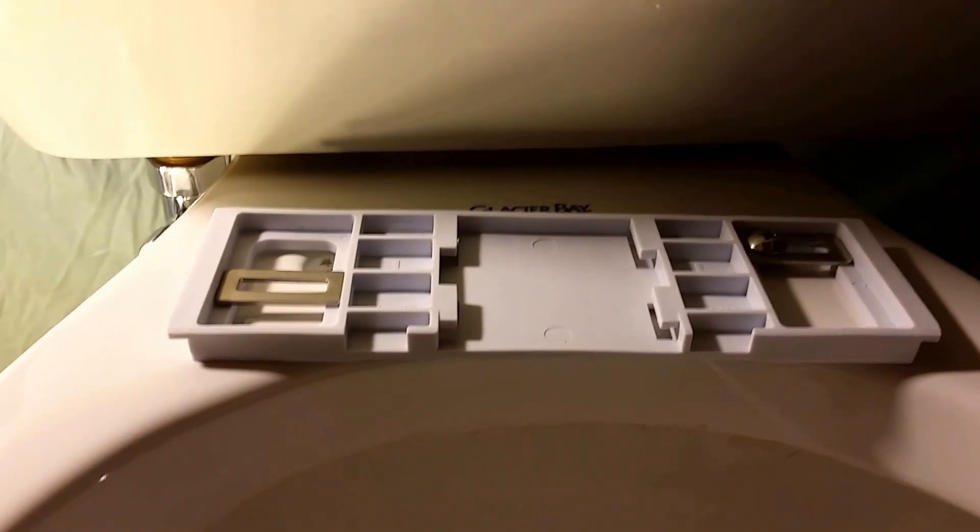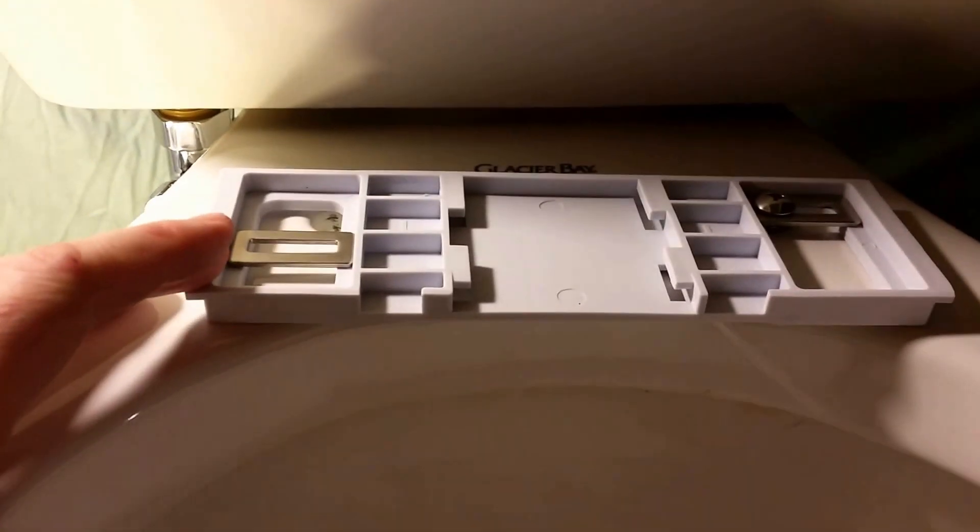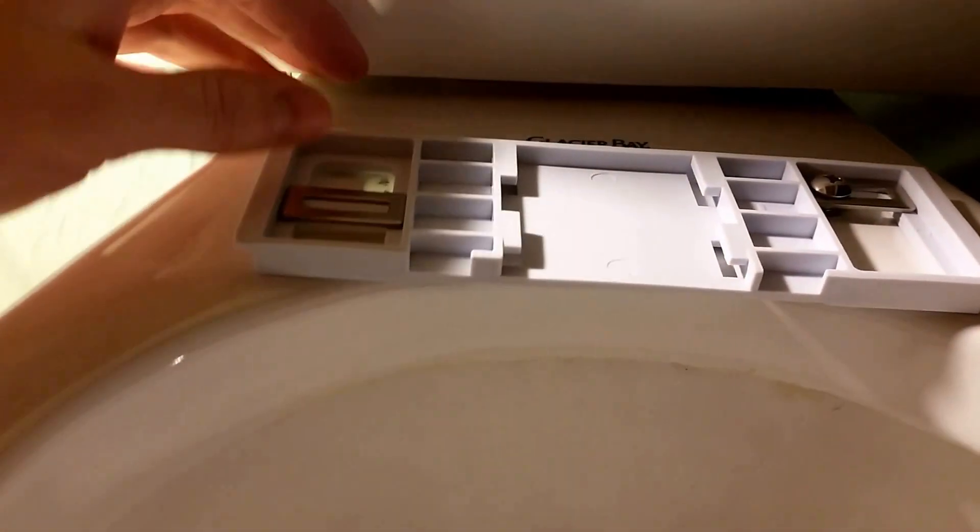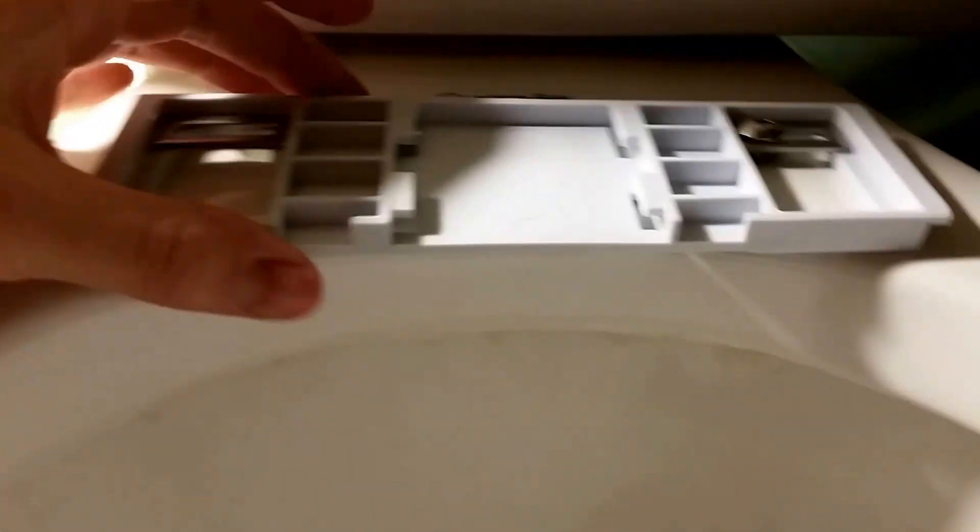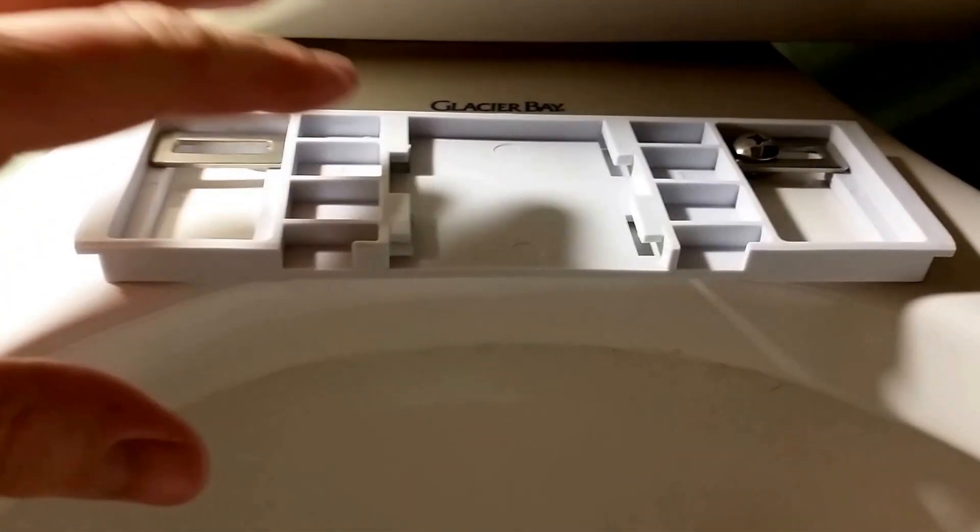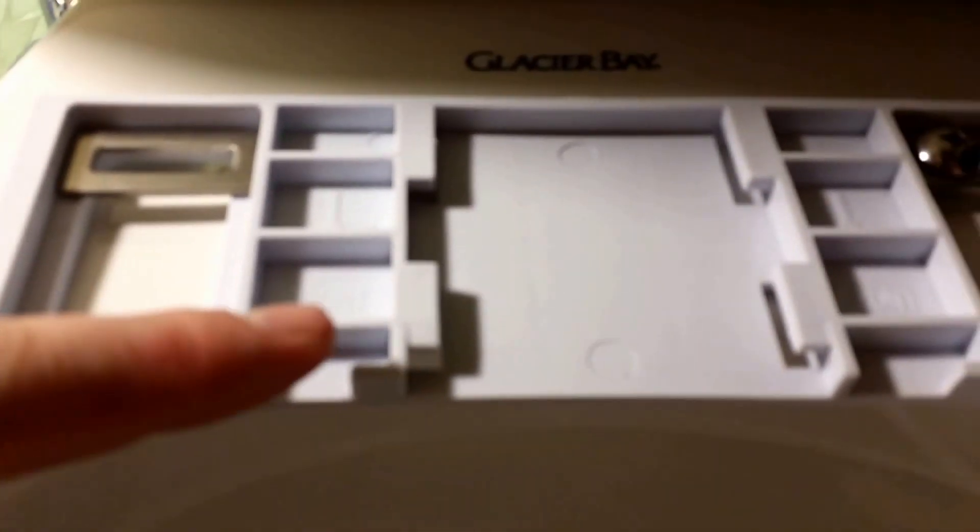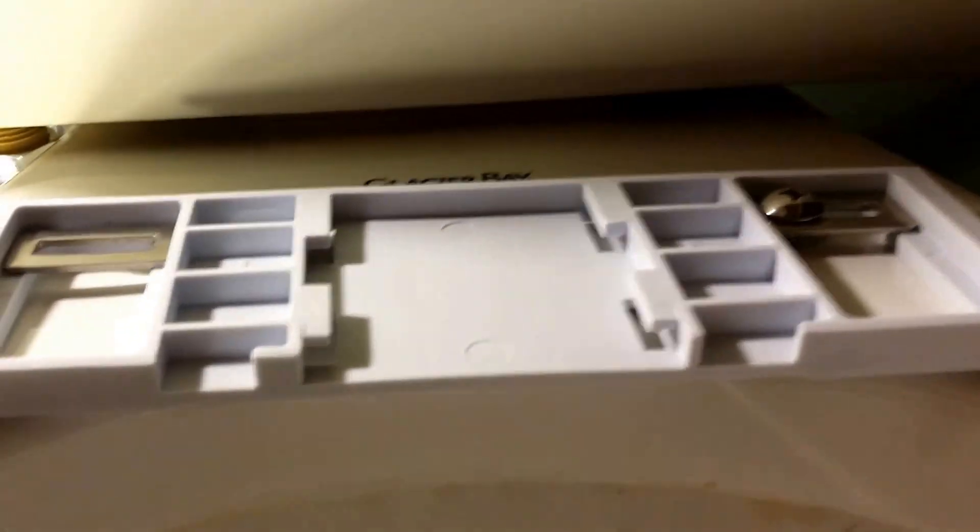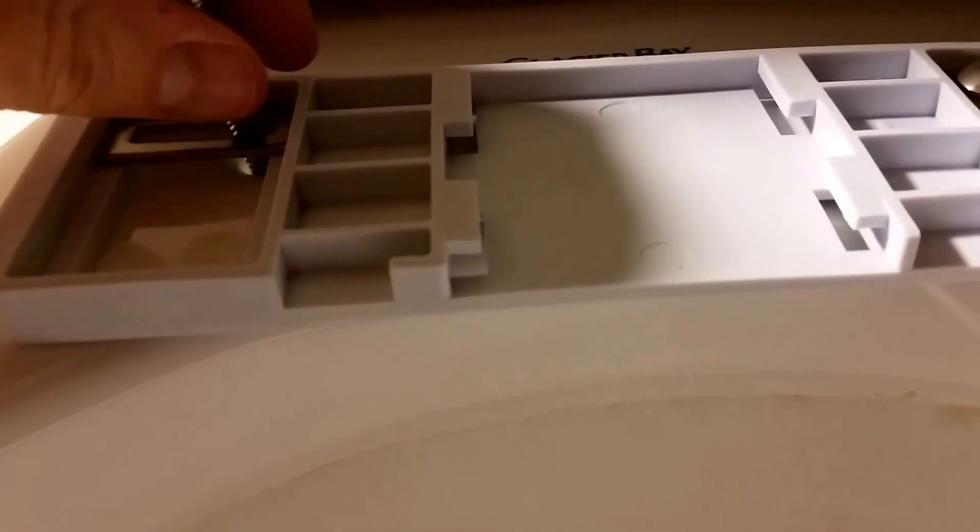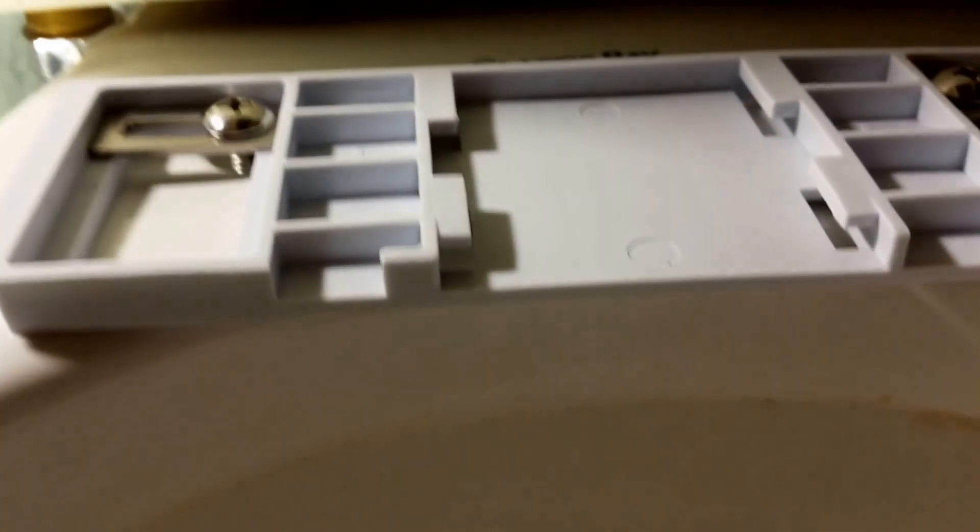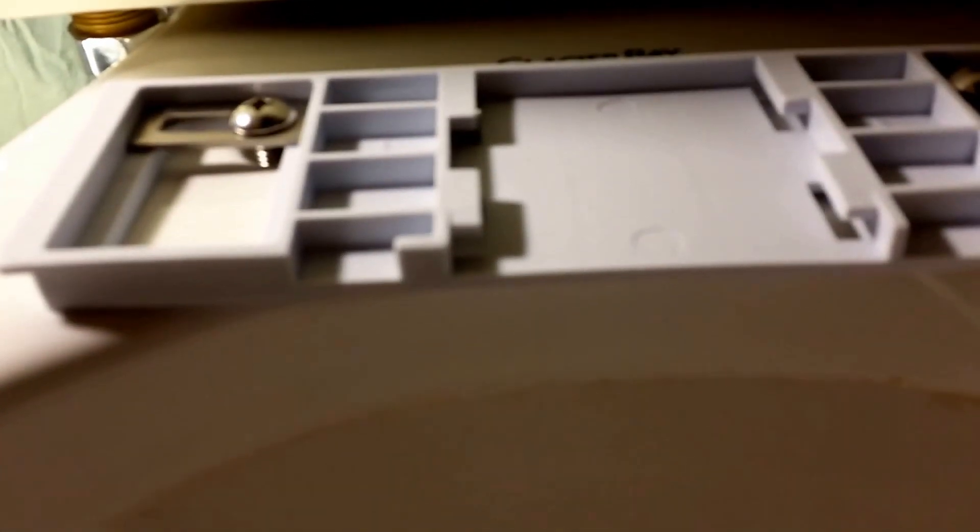Okay, so next step is going to be to attach the bracket that holds the bidet on. What you're going to want to do is put these little metal brackets inside the larger one, slide the plastic bracket as far forward as possible, and then you see there's a little thing that says front right there. So just make sure that that's facing forward, and then you're going to drop the screw in through there.